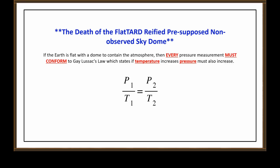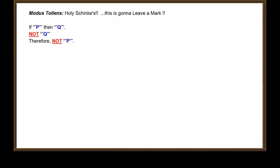The death of the flat-earther's presupposed non-observed sky dome. If the Earth is flat with a dome to contain the atmosphere, then every pressure measurement must conform to Gay-Lussac's law, which states if temperature increases, pressure must also increase. P1 divided by T1 has to equal P2 divided by T2. Let's test this with a Modus Tollens: if P, then Q. Not Q, therefore not P.